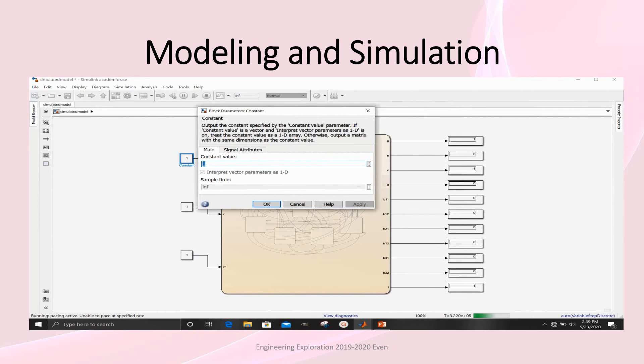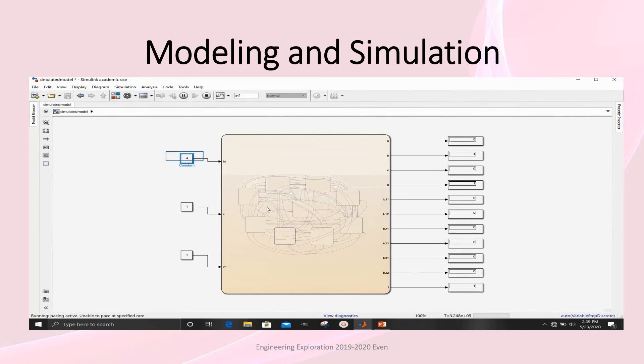If we change the constant value as 4, the bot jumps to the back state.